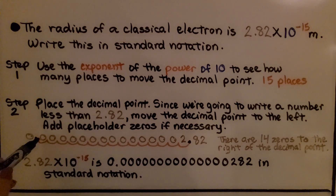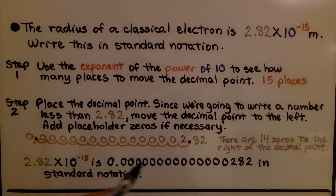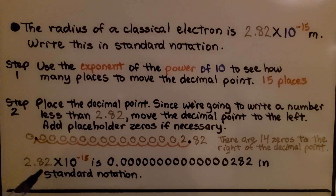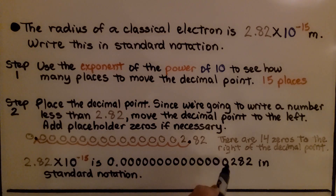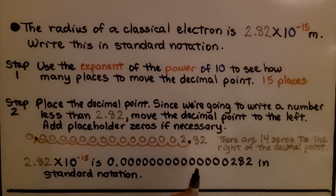There are 14 zeros between the decimal point and the two. So 2 and 82 hundredths times 10 raised to the negative 15th power is written with 14 zeros and then 282 in standard notation. That's a number I don't want to have to read — you get the point.